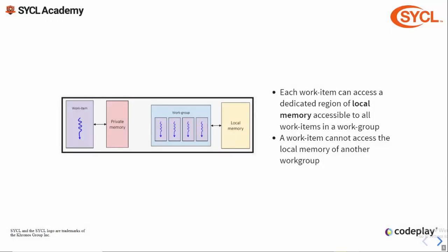Next up we had work groups, a group of work items collected together. Each work item can also access a dedicated region of memory called local memory. Local memory is accessible to all work items of a work group, making it very useful for sharing partial results between work items. However, no work item can access the local memory of another work group other than its own.